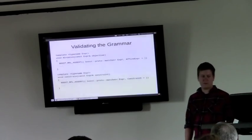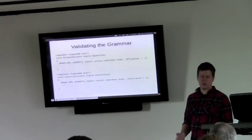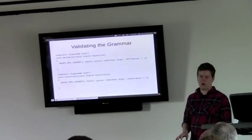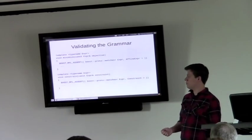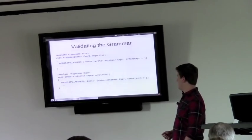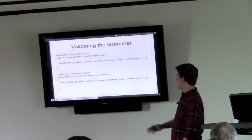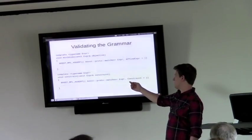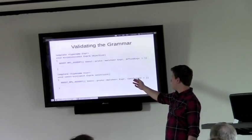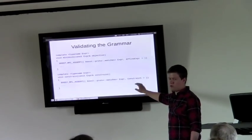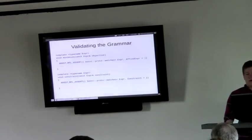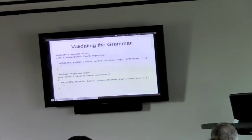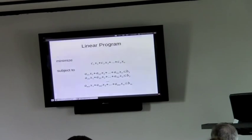And to validate that, you can do it at compile time. So if you're, as a user, you enter something that's wrong, that isn't a linear program, it will refuse to compile and fail, you know, as quickly as possible. So that just looks like this. You ask Proto to match the expression to your grammar rule, and it will attempt to do so, or return false if it can.